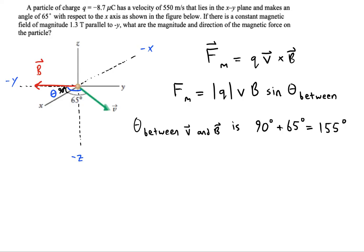Okay, well, now we can just plug in everything that we have. So magnetic force will be negative 8.7 microcoulombs times a velocity of 550 times a B field strength of 1.3 teslas. And then we'll do sine 155.